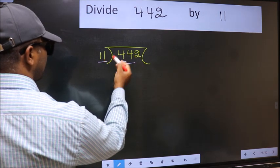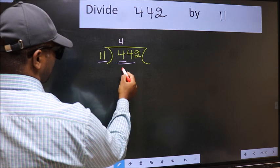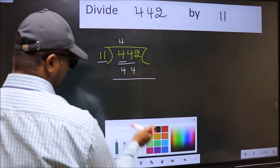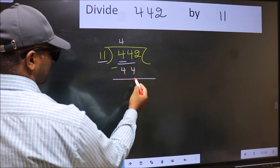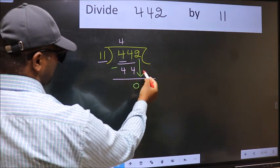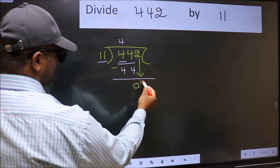When do we get 44 in 11 table? 11 fours 44. Now you should subtract. 44 minus 44, 0. After this, bring down the beside number. So 2 down.